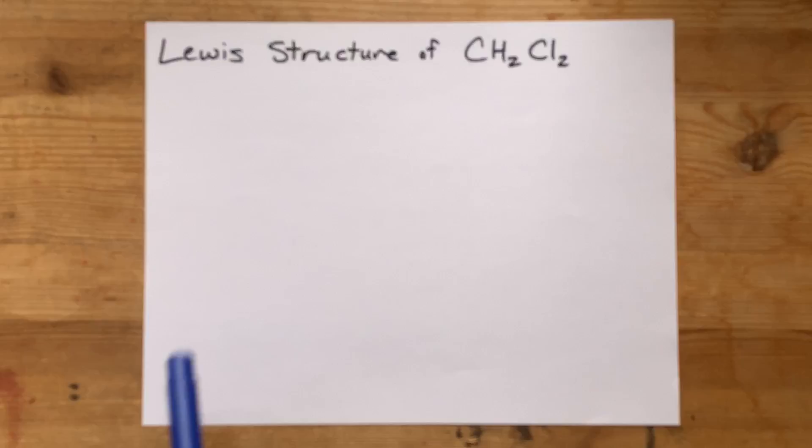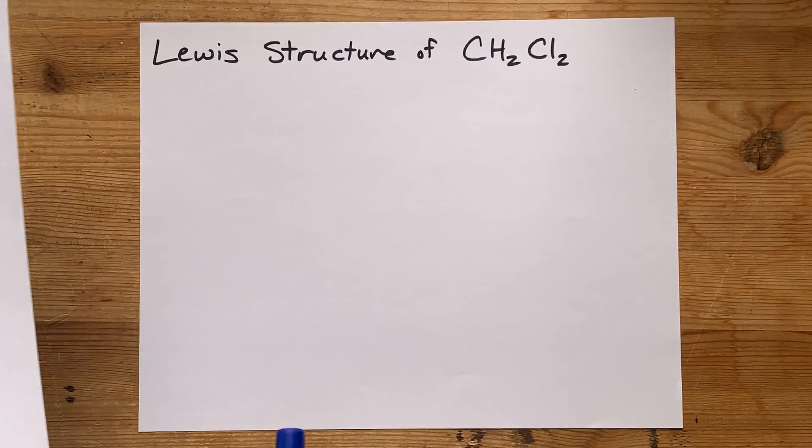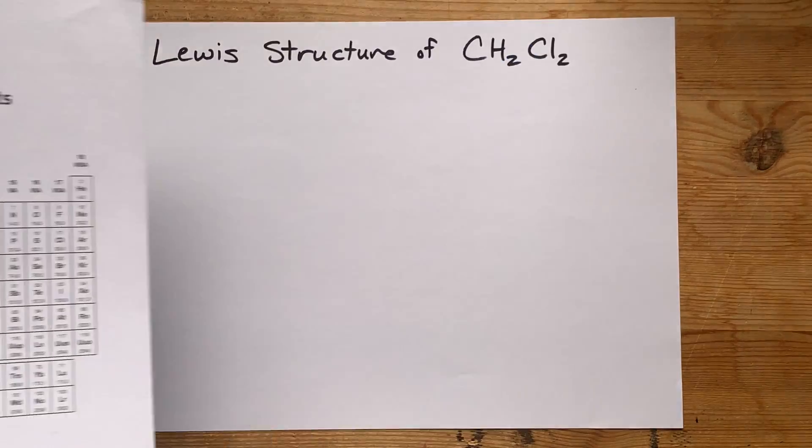We're going to draw the Lewis structure for CH2Cl2, or dichloromethane.